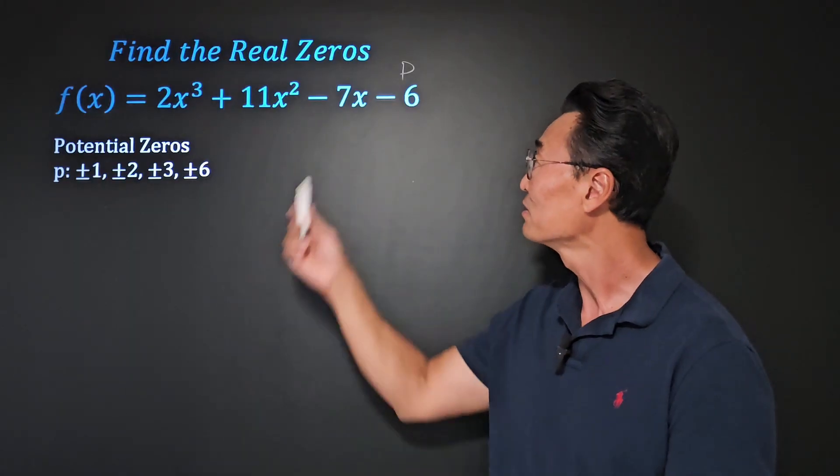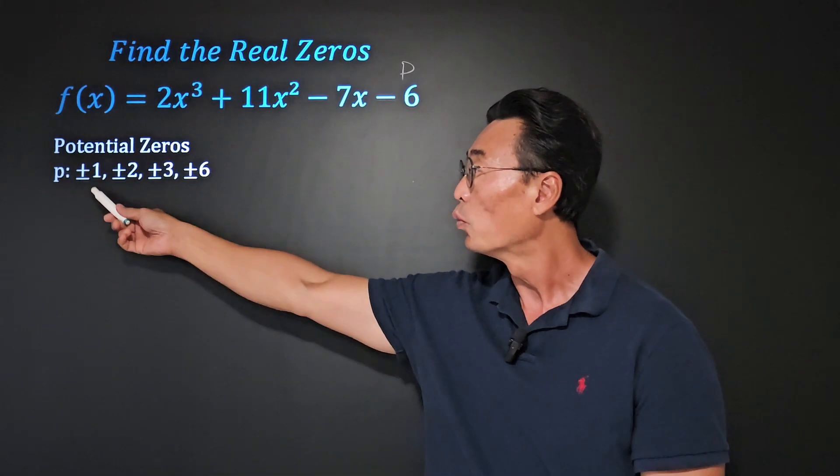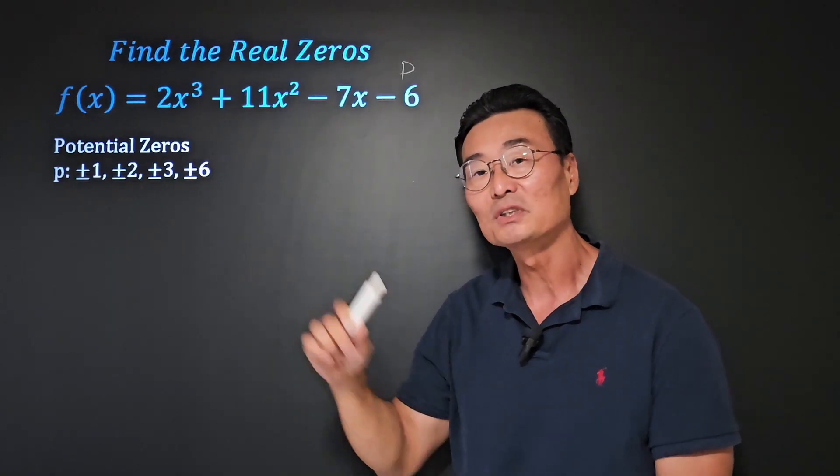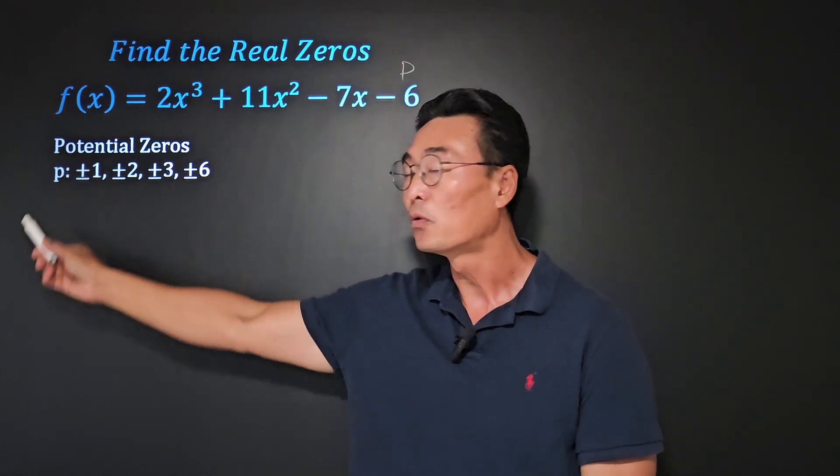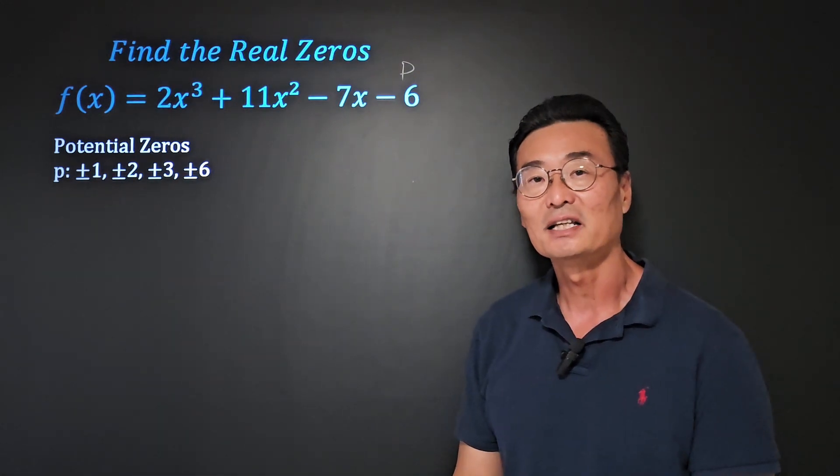So in this case, the factors of 6 are 1, 2, 3, and 6. And what's important here is that we need to go ahead and add the plus minus for the list of p's.